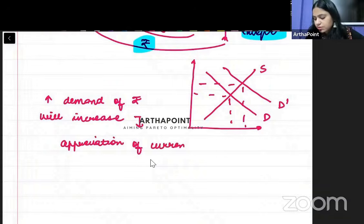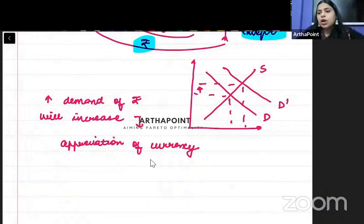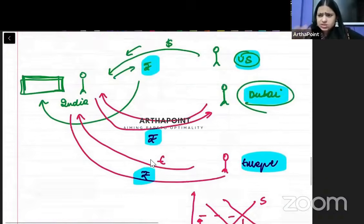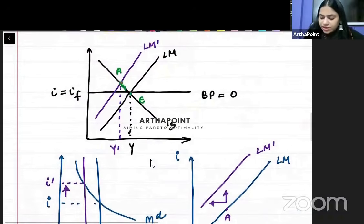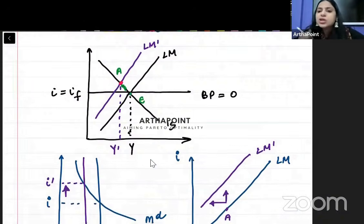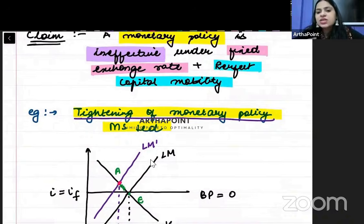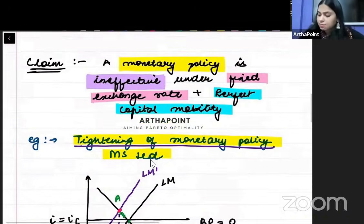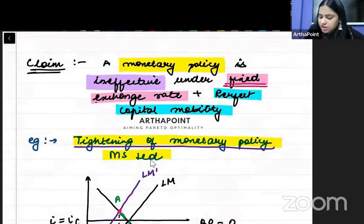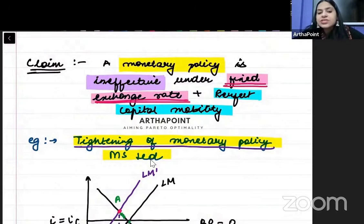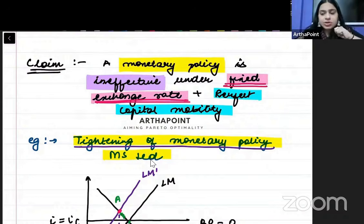What will happen? Appreciation of currency. As we understood, whenever the demand of anything will increase, its price will shoot up — so here there will be appreciation of the currency. But at point A, we realize that there is appreciation of the currency — can we appreciate our currency? No, because we are saying it is a fixed exchange rate. So currency appreciation is not possible — we have to stop the exchange rate from appreciating.